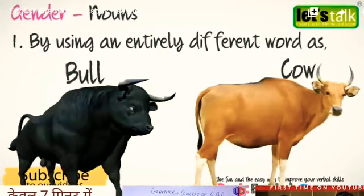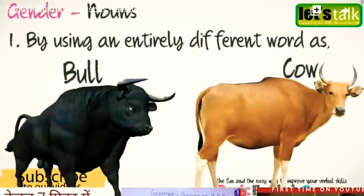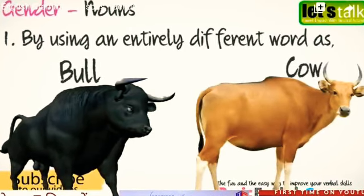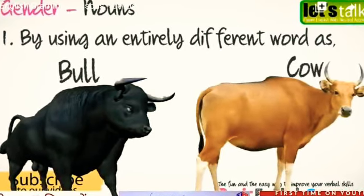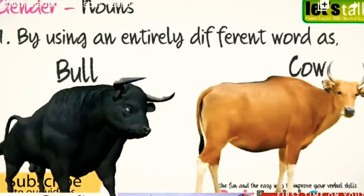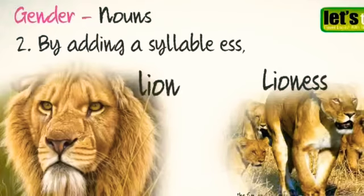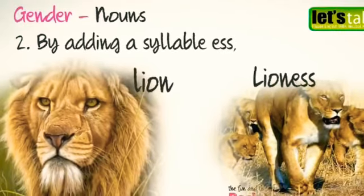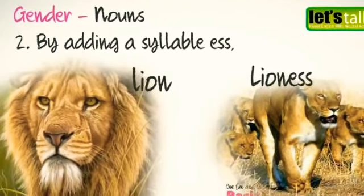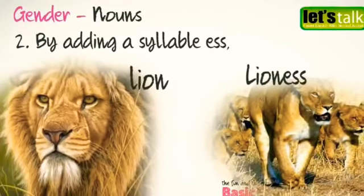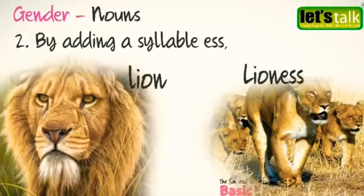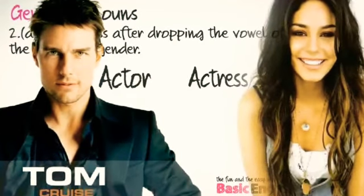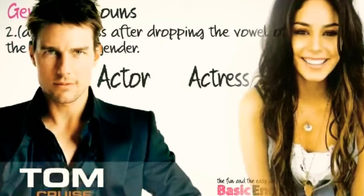The first is by using entirely different words, for example: bull — cow, cock — hen. The second way of forming feminine gender is by adding a syllable -ess, for example: lion — lioness.